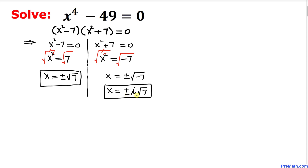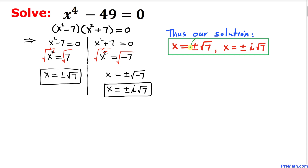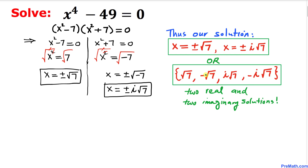So we have four solutions in total: two from the first factor and two from the second. We can write them in set notation. We got two real solutions and two imaginary solutions. Thanks for watching, and please don't forget to subscribe to my channel for more exciting videos. Bye!